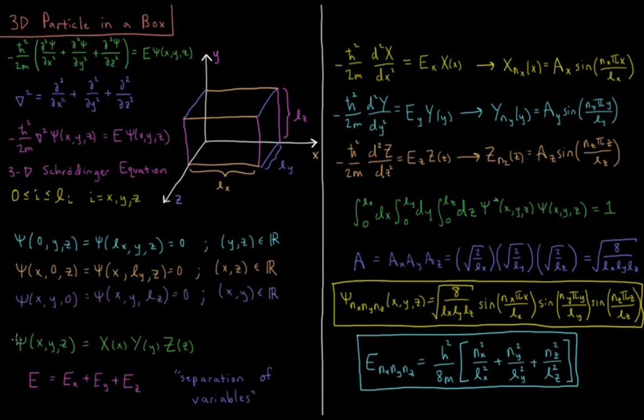So we're going to do separation of variables, because separation of variables works in this case. So we're going to assume our wave function is a product of three wave functions. Each of those functions are functions of one dimension. And when we do this, our energy is going to be a sum of the energies from each of these individual dimensions, x, y, and z. Again, this expression here being called separation of variables.